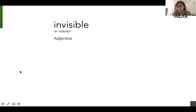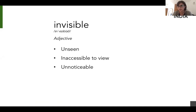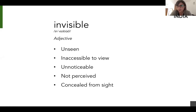There are many definitions in the dictionary and most of you have hit the right notes. One is the unseen — someone who is inaccessible to view, who's there but not in front of us. Unnoticeable. There are people who make sure they don't get noticed, and someone not perceived. And concealed from sight — some people are deliberately concealed from sight. In the shadows, downtrodden.